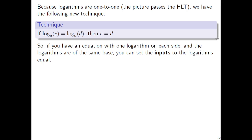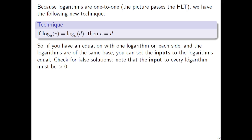In words: if you have an equation with one logarithm on each side — a log on the left side and a log on the right side — and the logarithms are of the same base, then you can set the inputs to the logarithms equal. The c and the d are the inputs to these logarithms; that's why the language is 'log base a of c,' with that word 'of.'